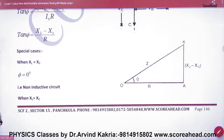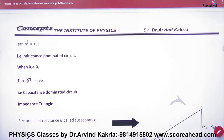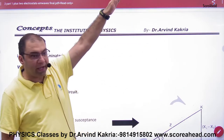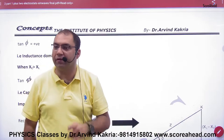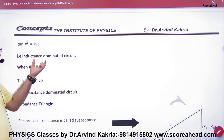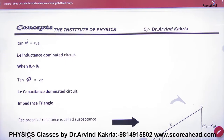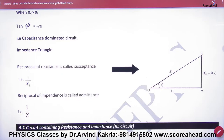If XL is greater than XC, then tan φ is positive — this is called an inductance-dominated circuit, and the phasor diagram goes above. If XC is greater than XL, then tan φ is negative — this is a capacitance-dominated circuit, and the diagram goes below. The reciprocal of reactance (XL or XC) is called susceptance, and the reciprocal of impedance is called admittance.